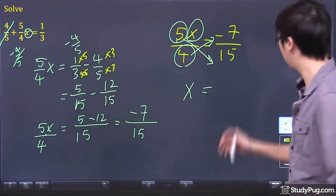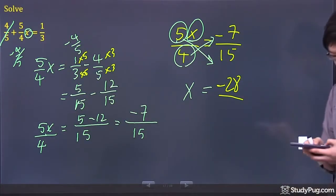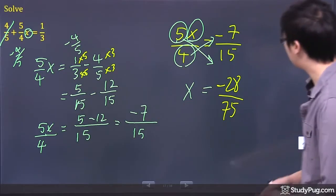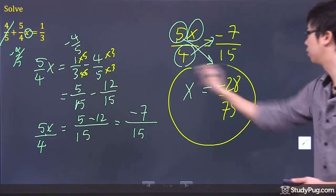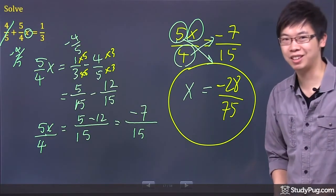Take the 4 times the negative 7. It's negative 28. And take the 5 times the 15. That's too big for me. 75. Then we have negative 28 over 75. Is it possible that we can reduce this number? Let me get a quick calculation here. Nothing we can do. Boom. Final answer, negative 28 over 75. Thanks so much.